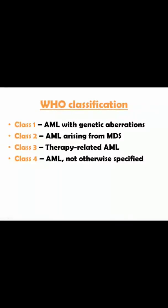Class 2 includes AML arising from myelodysplastic syndrome. Class 3 is therapy-related AML, which is AML due to treatments such as cancer chemotherapy or radiotherapy. All other types that are not otherwise specified, or where we don't know much about it in detail, are given in Class 4.